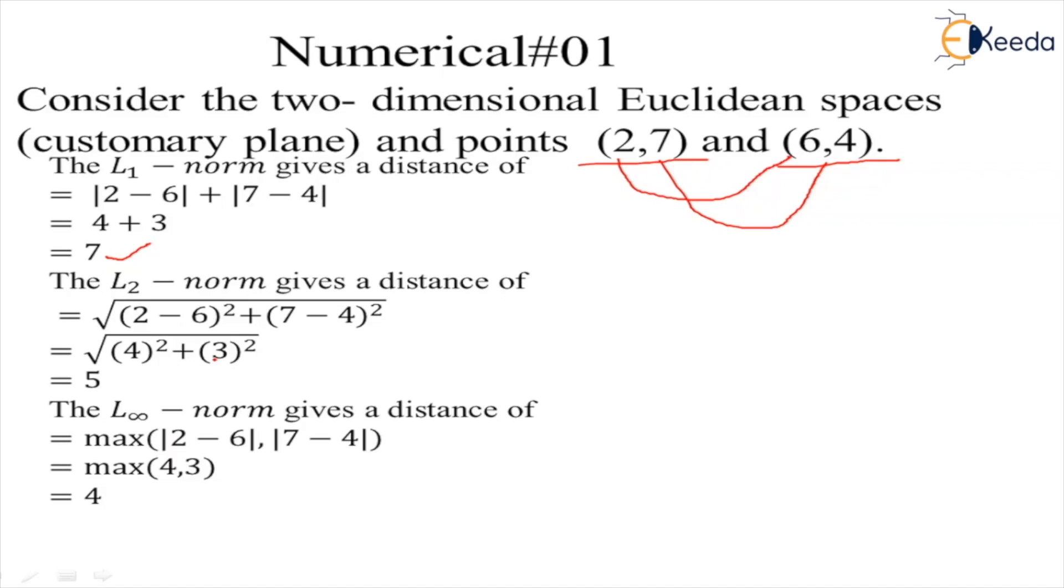L∞ norm gives a distance between these two points: max(|2-6|, |7-4|) = max(4, 3) = 4. Thank you.